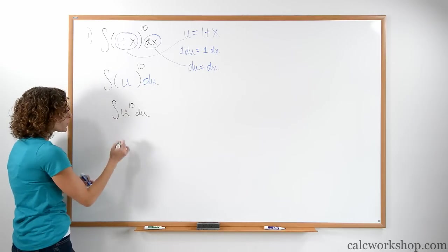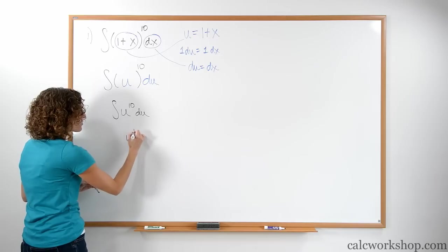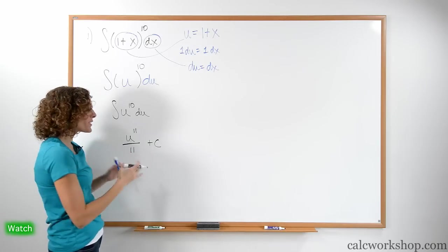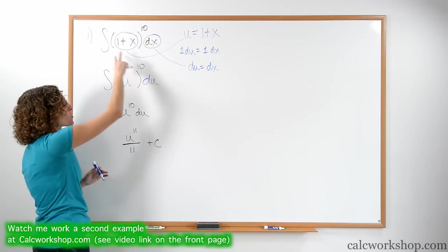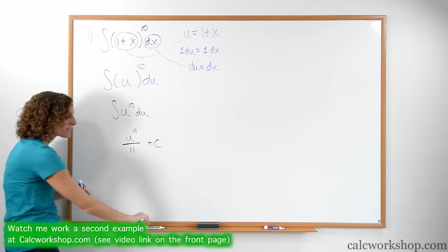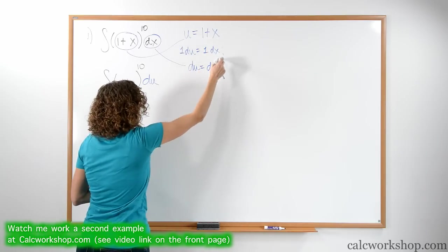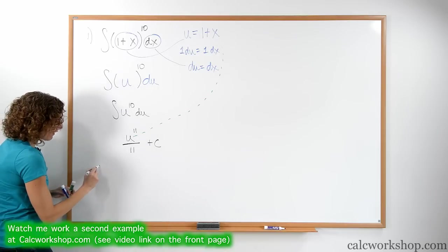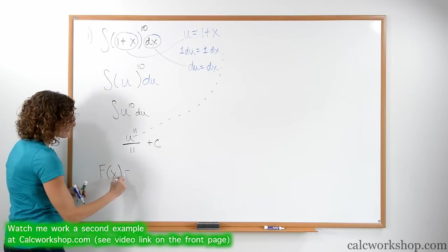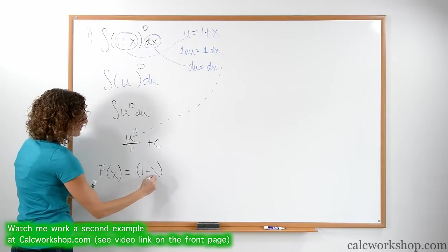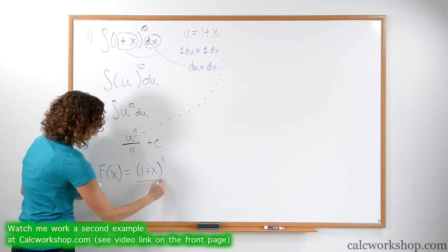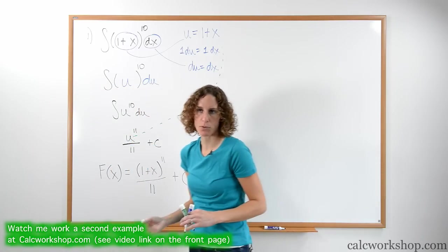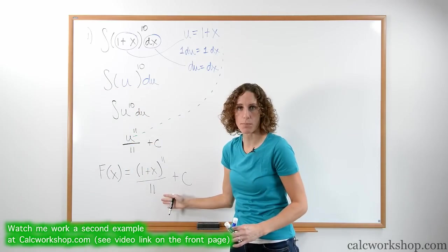So if we integrate it, what we get is u to the 11th over 11, and then plus c. Now, the original question never had a u in there. The original question had x's. So the last part of the problem is to take what my u was and replace it back. So that means the final answer of big F of x is nothing more than 1 plus x to the 11th over 11 plus c. We have utilized the idea of a change of variables to integrate the problem. Let's look at another.